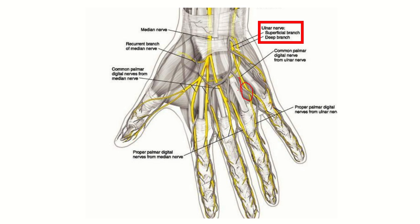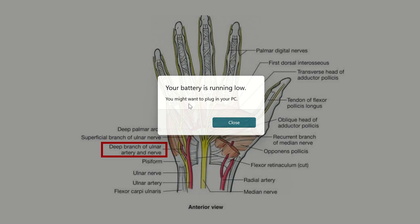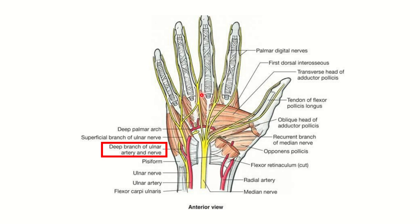Here we can see the interossei muscle and a nerve coming in and supplying this area. The name of the nerve is the deep branch of the ulnar nerve. The ulnar nerve supplies all the interossei — both palmar and dorsal interossei — and also the medial two lumbrical muscles. So all the intrinsic muscles of the hand, including palmar and dorsal interossei, are supplied by the deep branch of the ulnar nerve, as we can see in this figure.